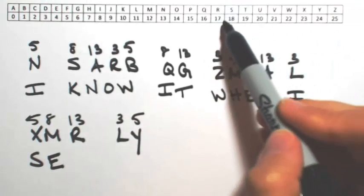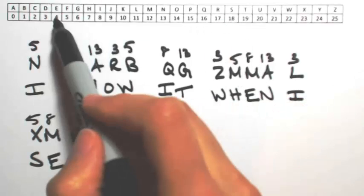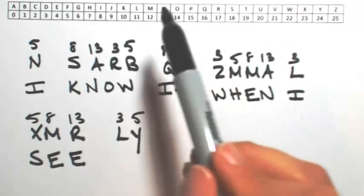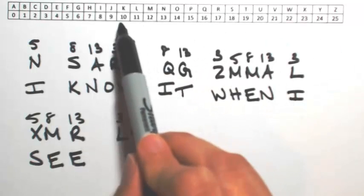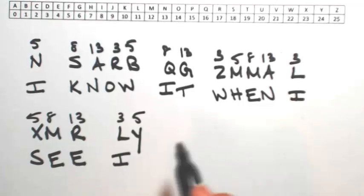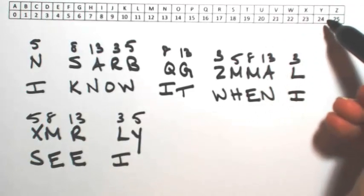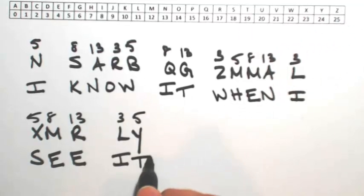R was shifted by 13, so 17 minus 13 is 4, giving me an E again. Okay, last one there, L was shifted by 3, so 11 minus 3 is 8, giving me an I. And then Y was shifted by 5, so 24 minus 5 is 19, giving me a T. So here's our message: I know it when I see it.